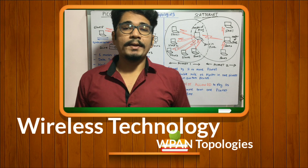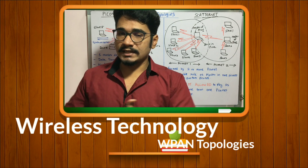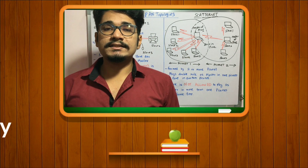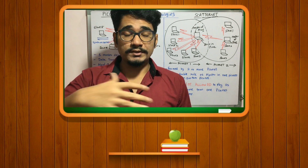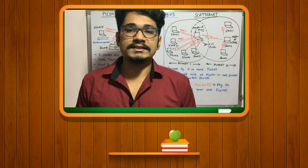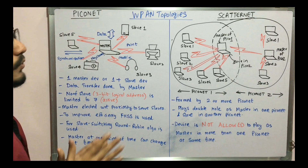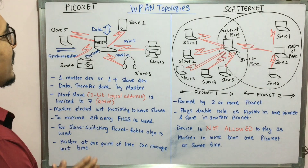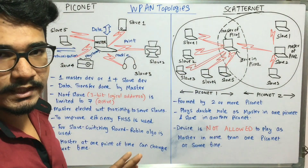In WPAN, we have the master as well as the slave architecture. In this video, let's understand how the master is connected to different slave devices. We have two basic topologies in WPAN — the Piconet as well as the Scatternet.